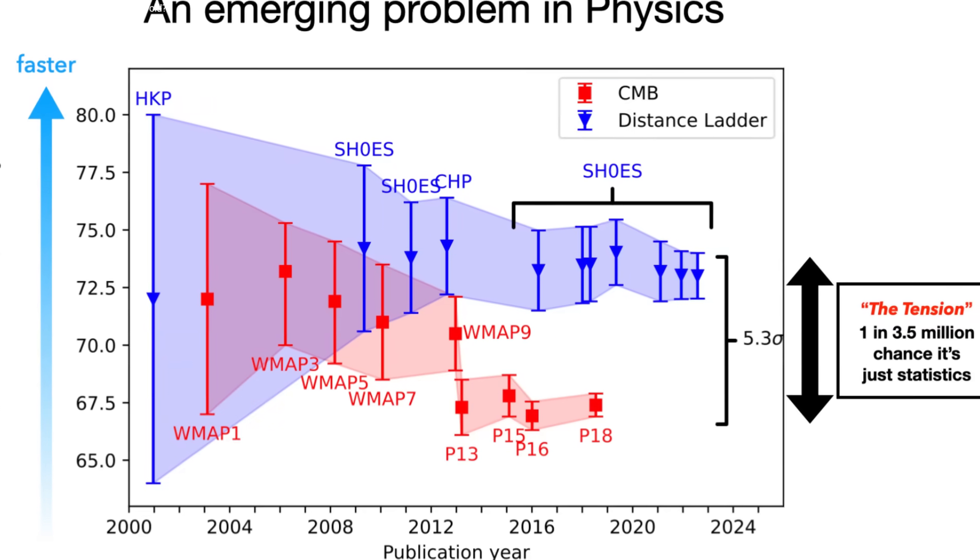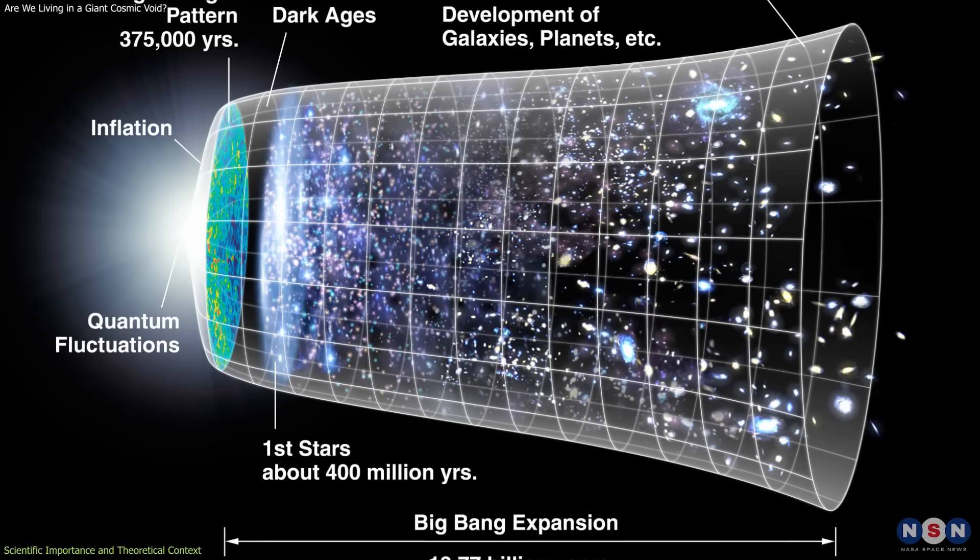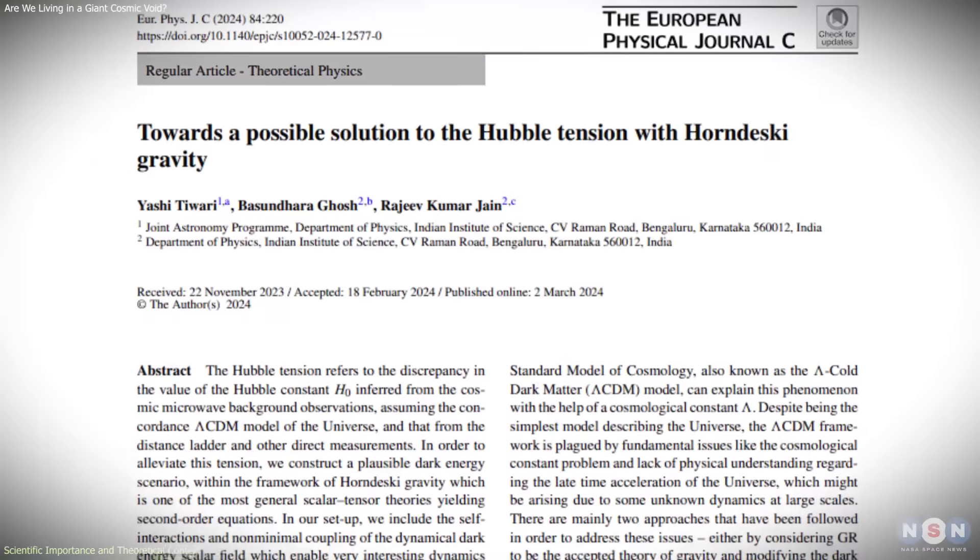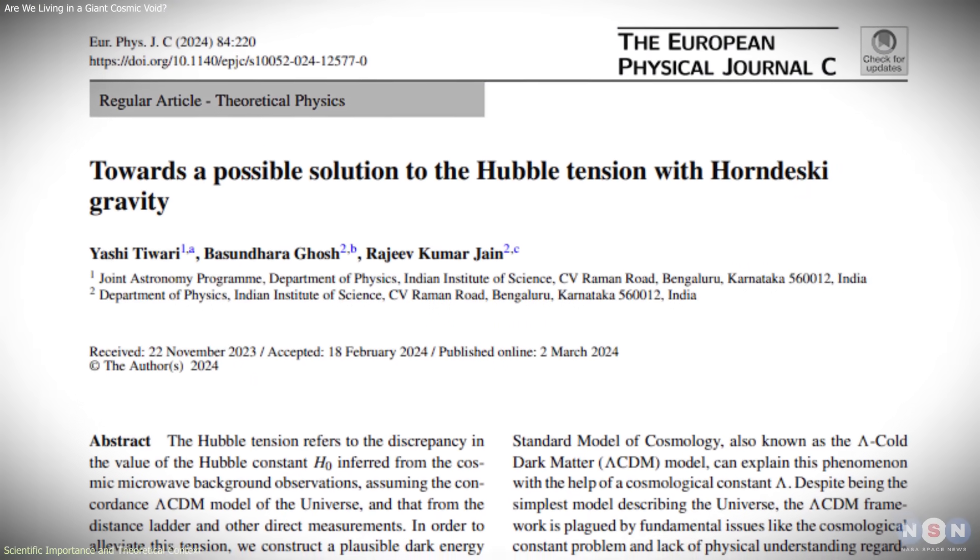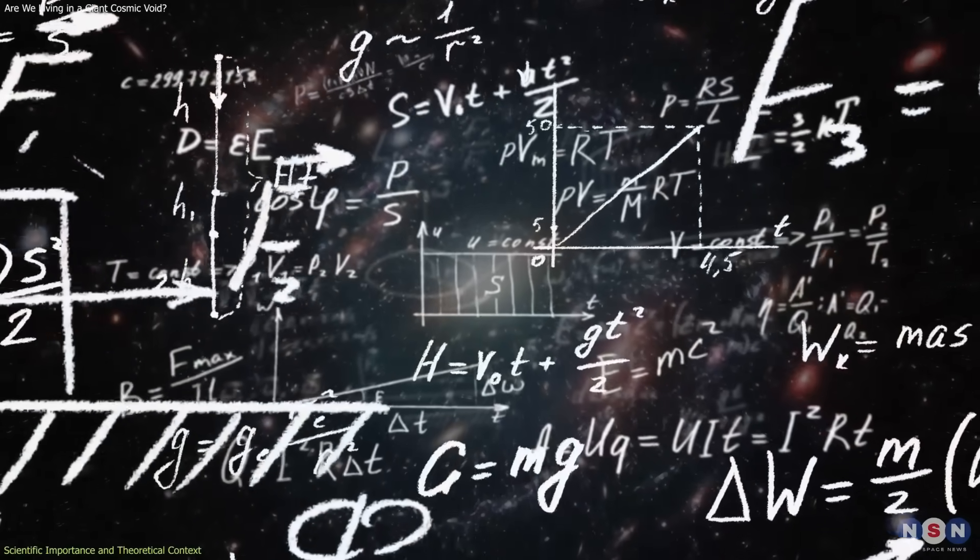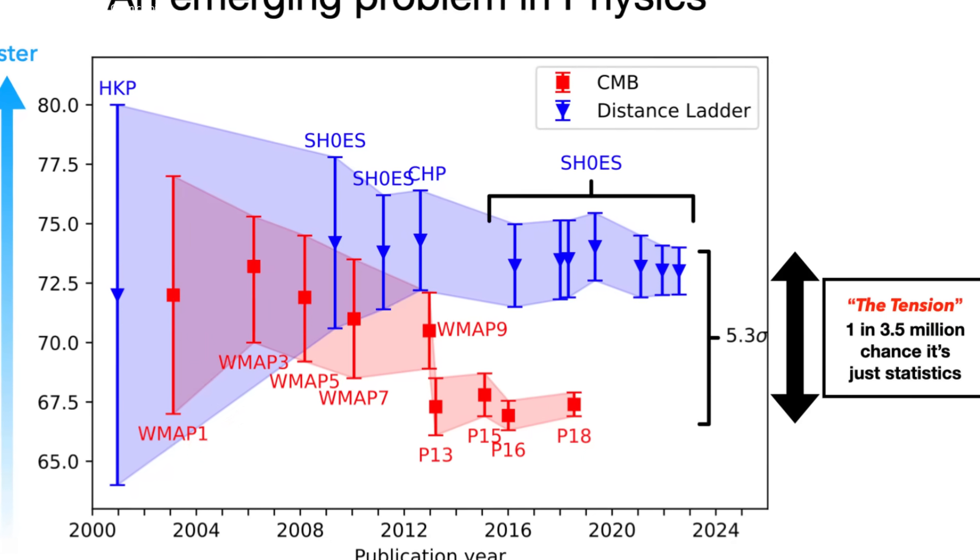Many proposed explanations attempt to resolve this tension by modifying the standard cosmological model. Some involve changes to the behavior of dark energy, others introduce new particles, or alter gravity itself. While these ideas are actively explored, none has achieved broad consensus or resolved the tension without introducing additional complications.